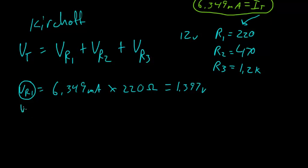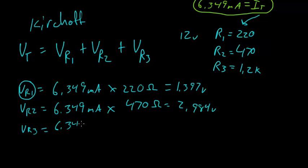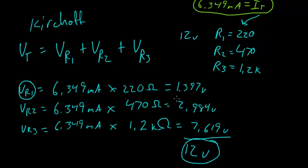If we do the same thing at VR2, we have the same amperage, so 6.349 milliamps. We multiply that by 470 ohms, and we get 2.984 volts. And then VR3, same thing again, 6.349 milliamps. Multiply that by 1.2K ohms, and that will give us 7.619 volts. And if we add those all up, it should come out to 12 volts. And then that verifies that we did everything right. So Kirchhoff is a verification that you did everything how you needed it to happen.